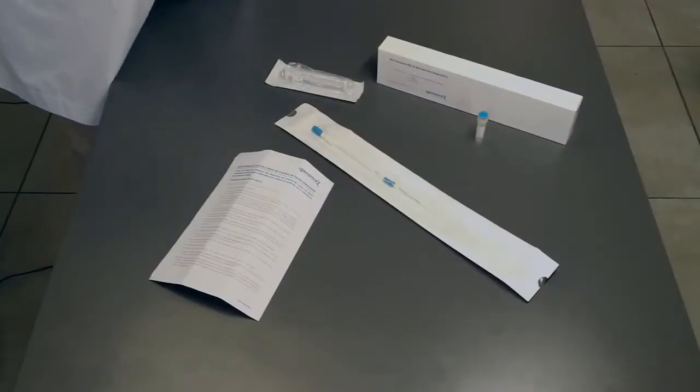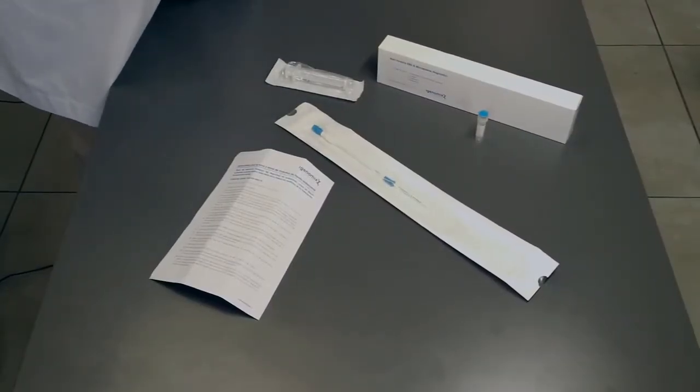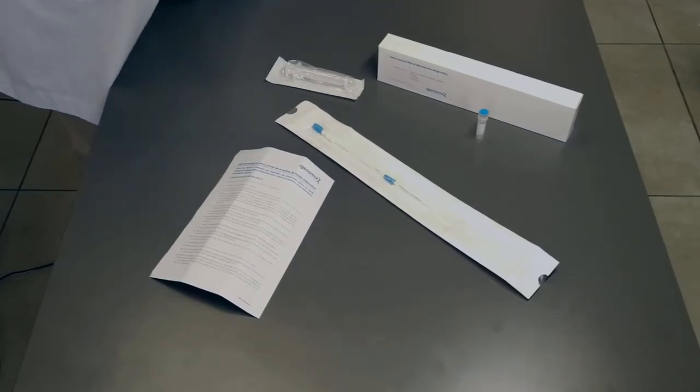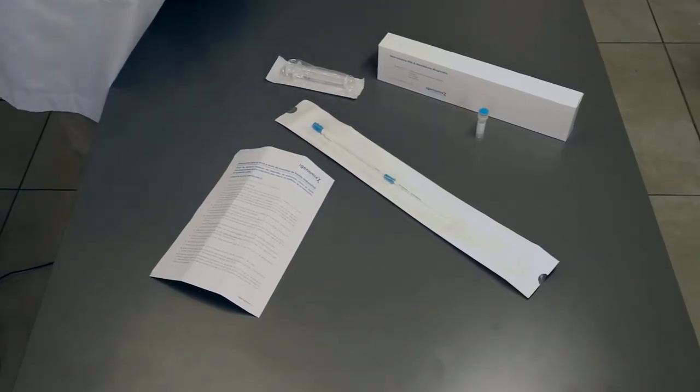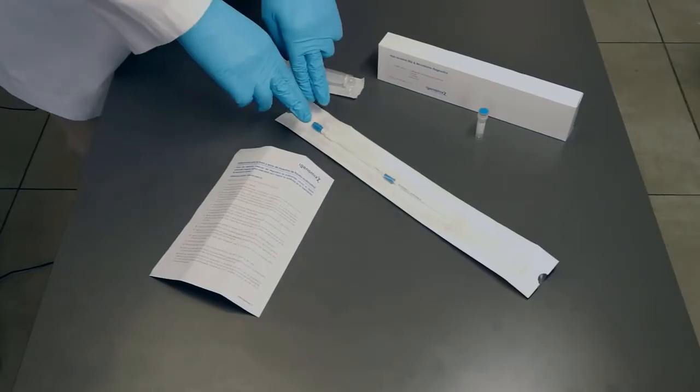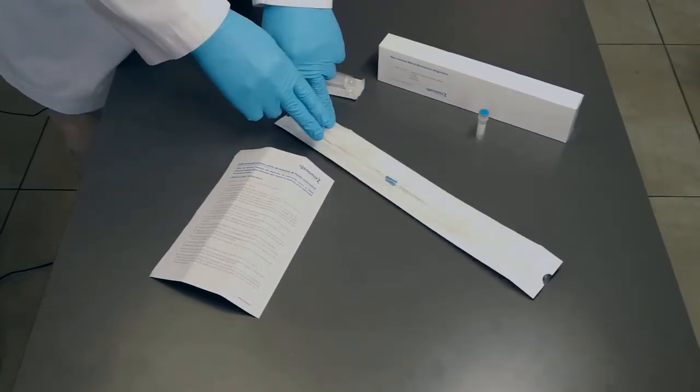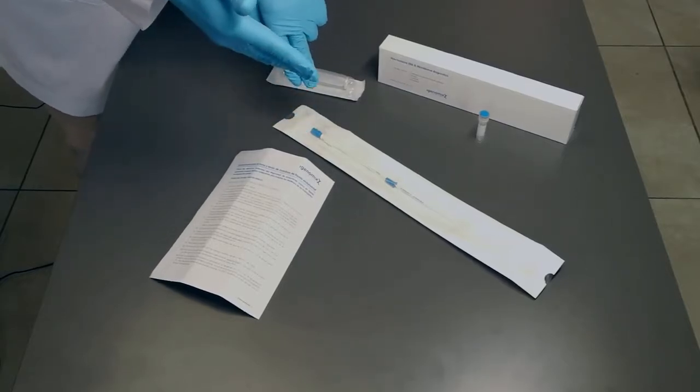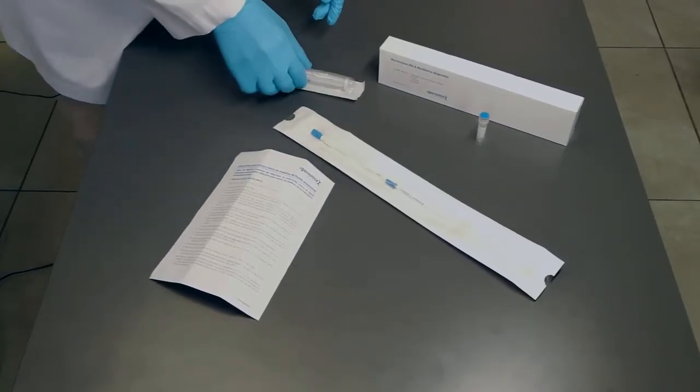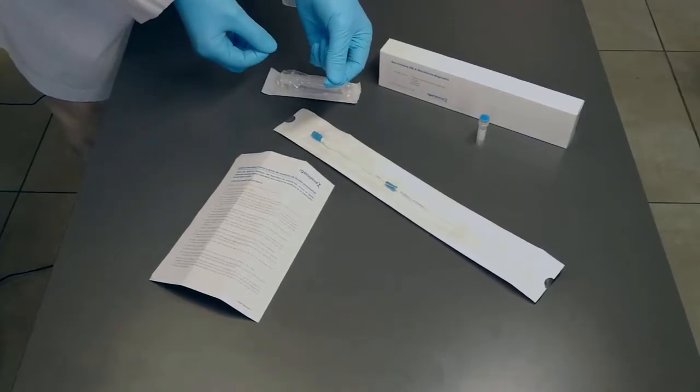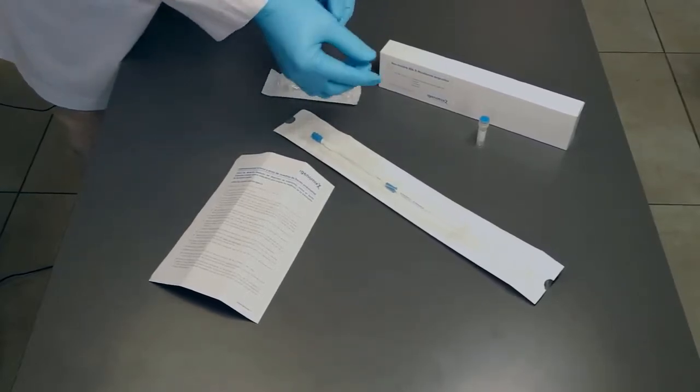The required material to perform the extraction of endometrial fluid will be provided to the clinician. We need a speculum to visualize the cervix, a transfer catheter that will be inserted into the cervix, and a 10 ml syringe that we will connect to the transfer catheter to do the proper vacuum to extract the endometrial fluid.